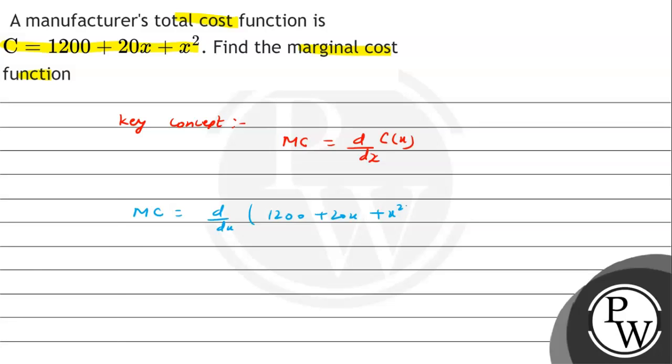So if we separate out to differentiate, 1200's differentiation becomes zero plus d/dx of 20x plus d/dx of x². Hence the marginal cost function becomes 20 + 2x.